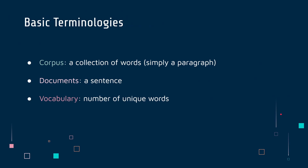Here are some basic terminologies you need to be familiar with in order to understand today's lesson. The first word is called corpus, and a corpus is essentially a collection of words — simply a paragraph or an essay. A document is simply a sentence. And third, we have vocabulary, which is the number of unique words. You can add a fourth term called words, but words really just mean words.